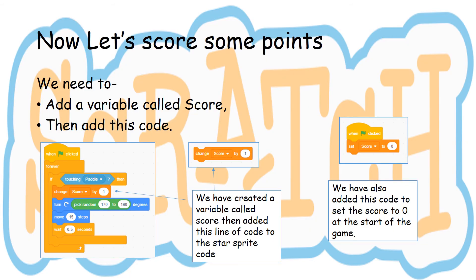Now let's make our game score points. We need to add a variable called score and then we add this code. We're going to add it to some code we already have — we're going to add change score by one. And we're also going to add when green flag is clicked, set score to zero.